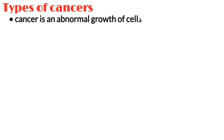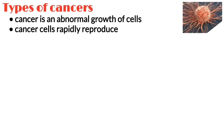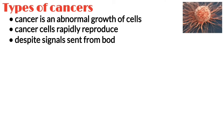Cancer is an abnormal growth of cells. Cancer cells rapidly reproduce despite restriction of space. Nutrients shared by other cells, as well as signals sent from the body to stop reproduction, are ignored by cancer cells.